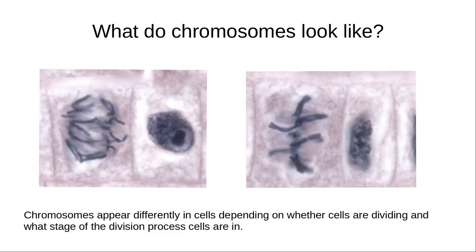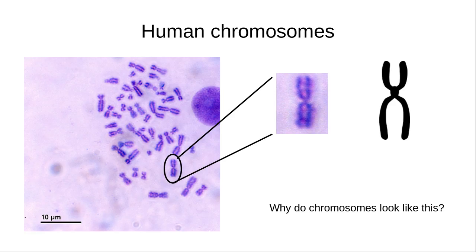Here we're looking at human chromosomes that have been stained and extracted from a dividing cell. A scientist can use this digital image to arrange the chromosomes by size, which is called a karyotype. Scientists use karyotypes to diagnose some genetic disorders based on the number of chromosomes or if the chromosomes are defective. We'll look at karyotypes in more detail when we talk about homologous chromosomes. If we zoom in on one of these chromosomes, you'll notice it sort of resembles the letter X.